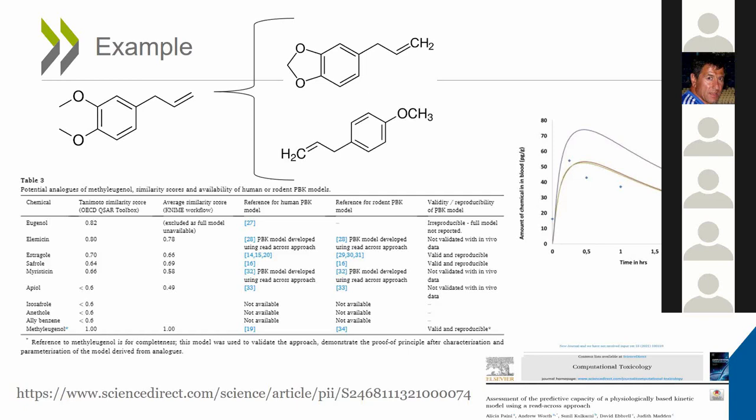From these five, when we looked into the literature for the prerequisite information, we found information only for two: estragol and safrole. From these two chemicals, we applied the principles just presented, and we were able to make runs using the estragol and safrole models with information from methyleugenol. As seen in the graph on the right, the in vivo methyleugenol data and the original PBK model developed for methyleugenol showed very similar predictions to the estragol model, while there was a higher difference when using the safrole model. Further details are available in the scientific paper we have published and in the annex.